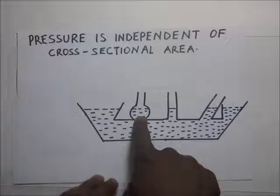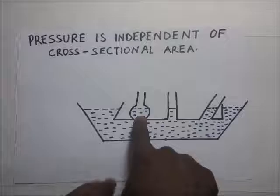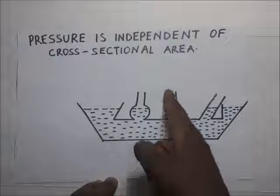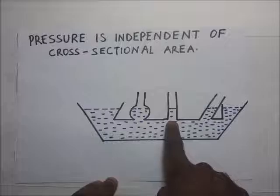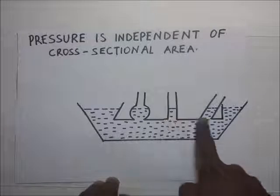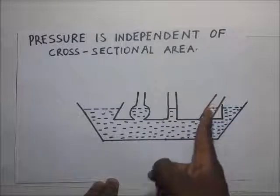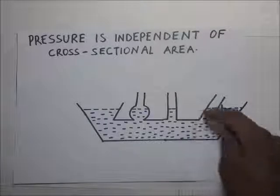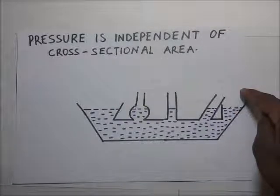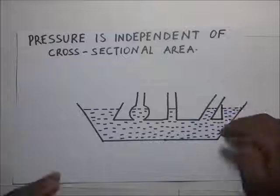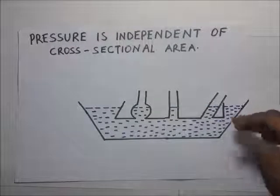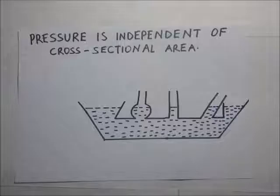The water levels will be the same in this round-shaped protrusion, in this cylindrical protrusion, and also in this slanting cylindrical protrusion. It means that the more you pour water, for example from here, these water levels will rise but they will rise at the same level throughout the entire flask.